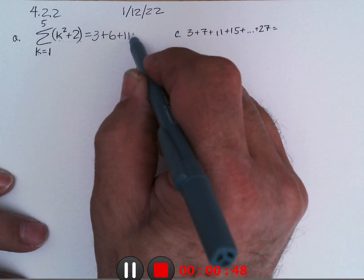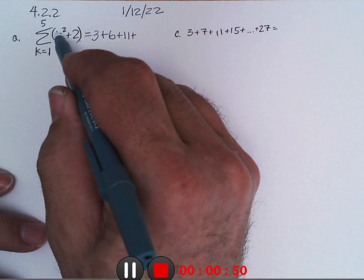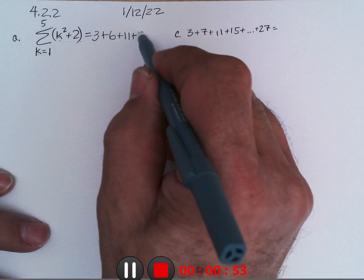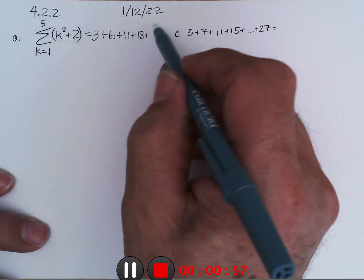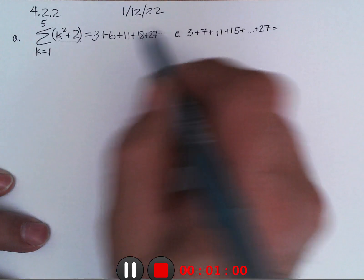Then you put 4 in, 16 plus 2 is 18. Plus you put 5 in, 25 plus 2 is 27. And if you add those up, I think you get 65.